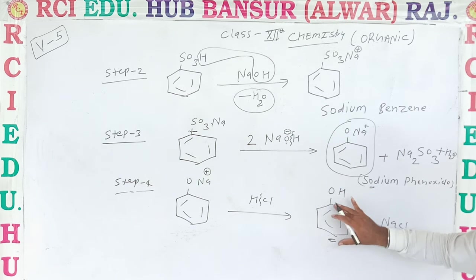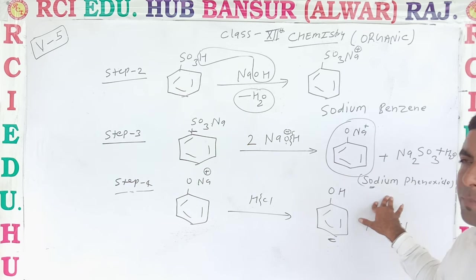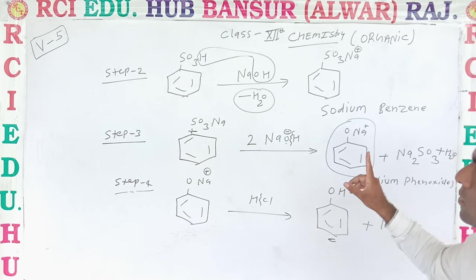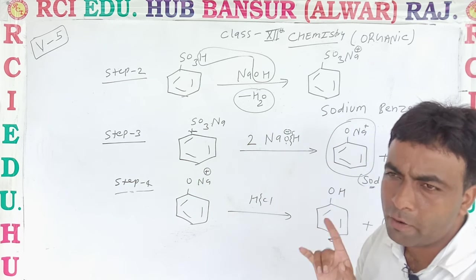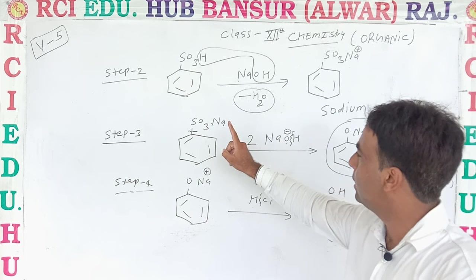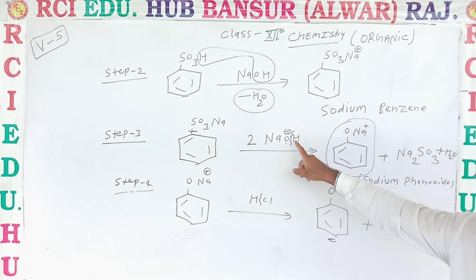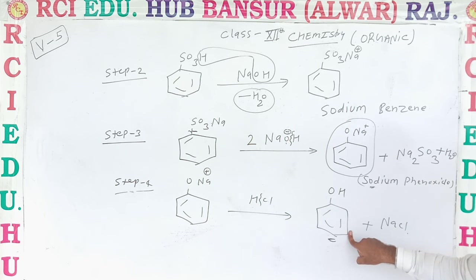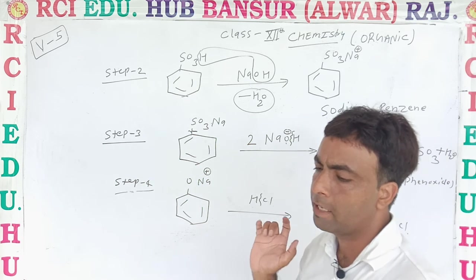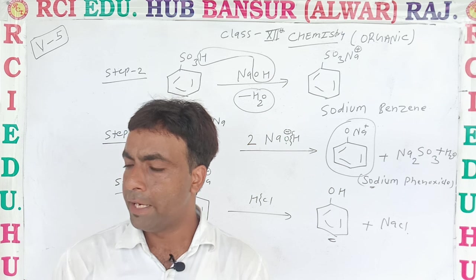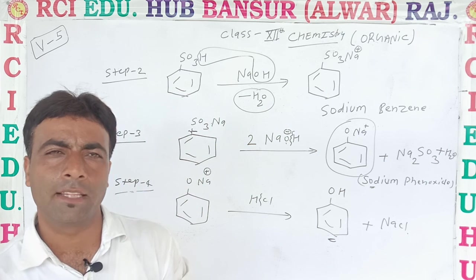To summarize: benzene reacts with oleum to form benzene sulfonic acid; benzene sulfonic acid reacts with NaOH to form sodium benzene sulfonate; sodium benzene sulfonate reacts again with NaOH to form sodium phenoxide ion; sodium phenoxide ion reacts with HCl to form phenol as the major product. In this video we saw the third method of formation of phenol from benzene sulfonic acid. In the next video we will study further laboratory methods. Thank you.